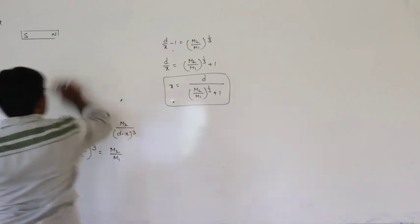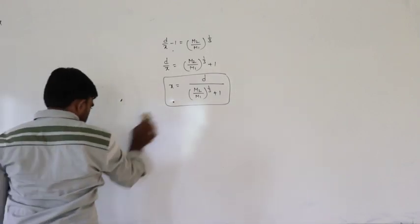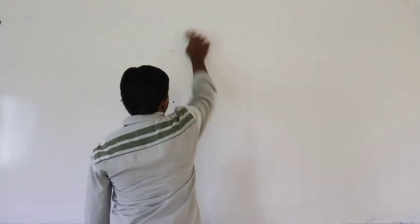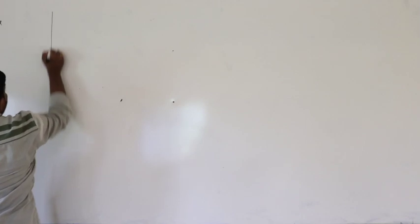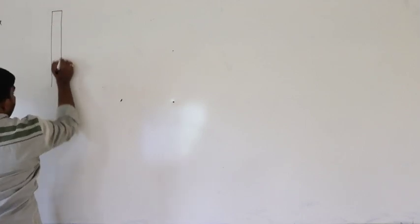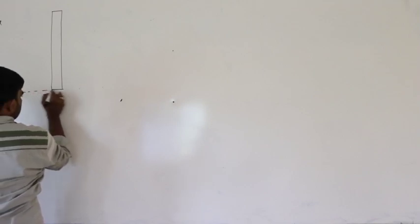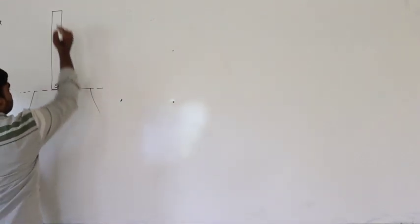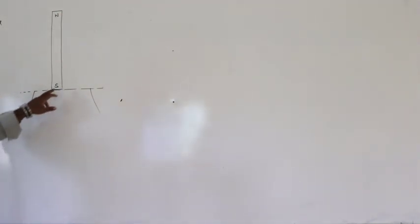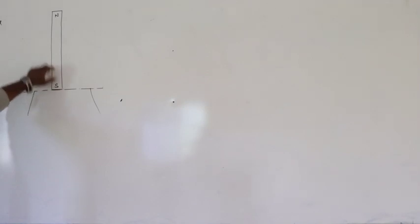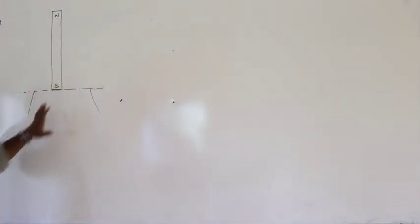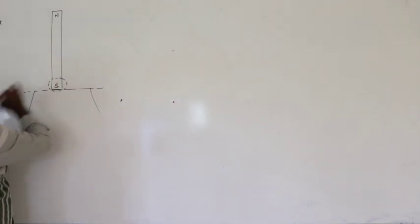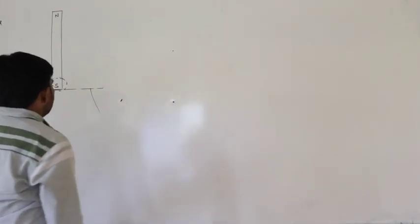Next, one more concept about null points. A long magnet is placed on the horizontal table — so one pole, say the south pole, is considered here and the north pole is far away. When compared to the near pole, the influence of the far pole is not considered. We consider only the influence of the near pole.